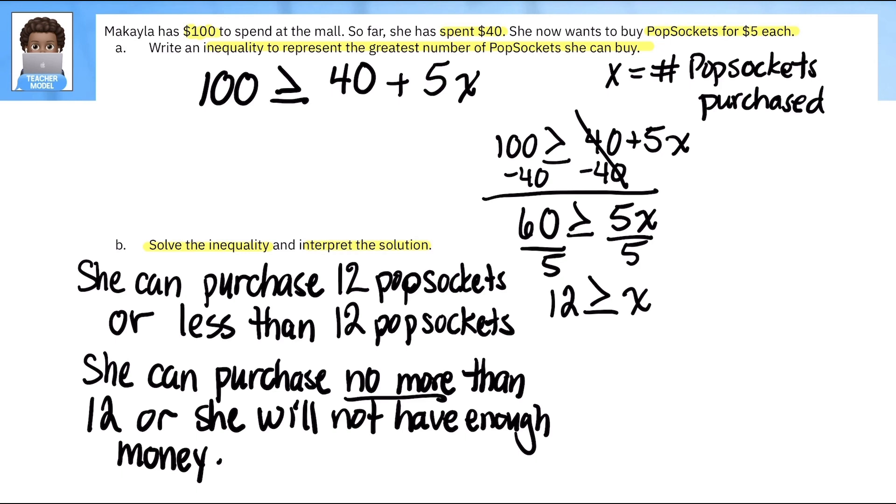All right, there we go. So as always, I'm a big fan of always just checking out the work just to make sure. So here we go. Here's 12. And we know 12 is greater than or equal to X. So X is going to be on the left side. I'm going to circle this part. And I want all the numbers less than 12 or equal to 12. So let's try this out.